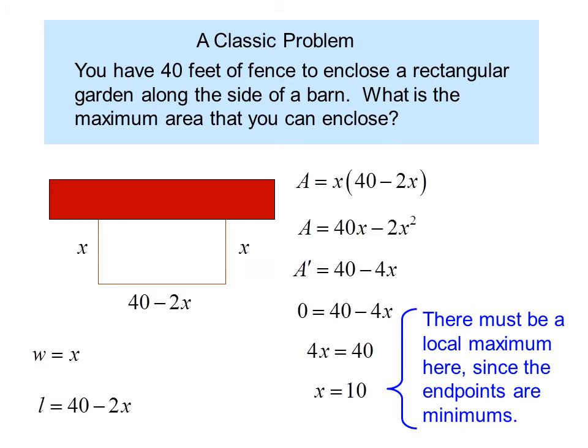So there must be a local maximum here, since the endpoints are minimums. One endpoint would be when x equals 0, so picture the fence just stapled on the side of the barn. The other endpoint would be when x equals 20, which means the fence would go straight out and straight back with no area in between. Therefore, this one must be the maximum.